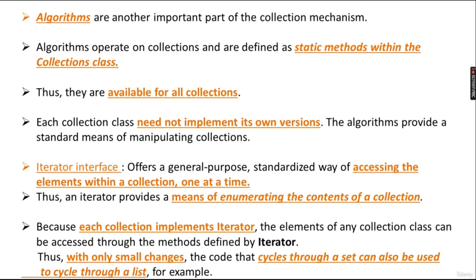The elements of any collection class can be accessed through the methods defined by the Iterator interface, since each collection implements it. Because the methods are the same for all, with only small changes the code that cycles through a set can also be used to cycle through a list. So whenever you are iterating a list or a LinkedList, you only need to make small changes.